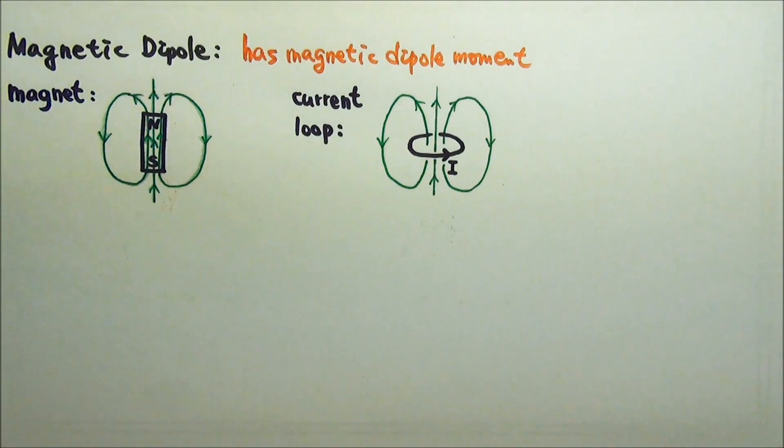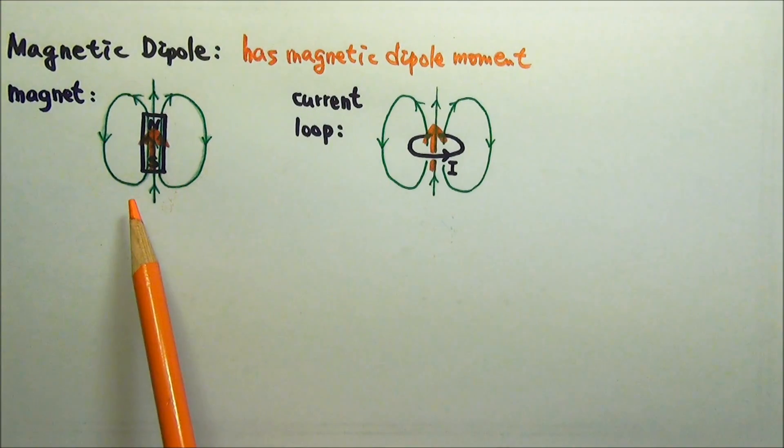For direction, we use the field direction at the center to represent the direction of dipole moment. So we can draw an upward arrow to represent each of them.